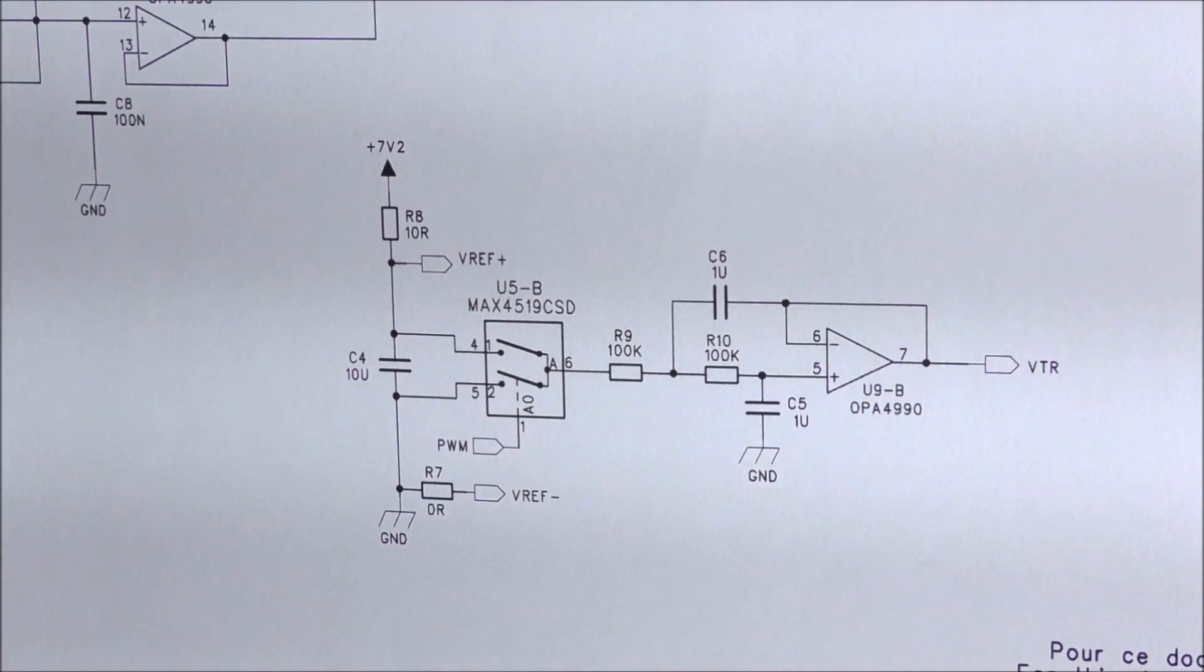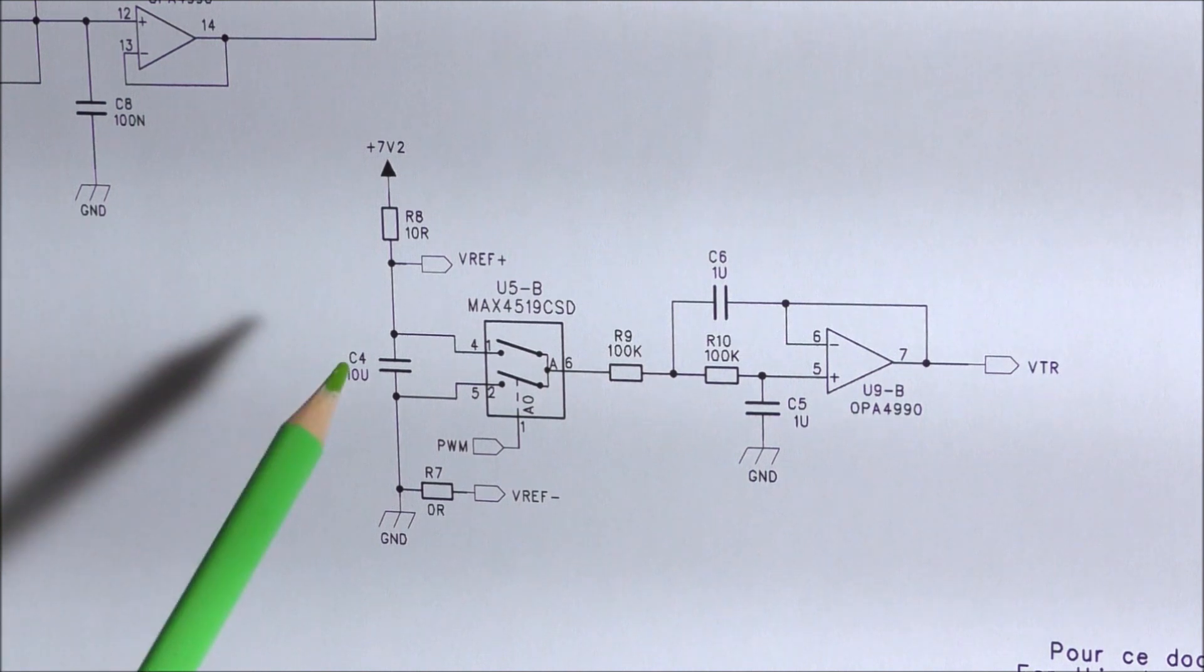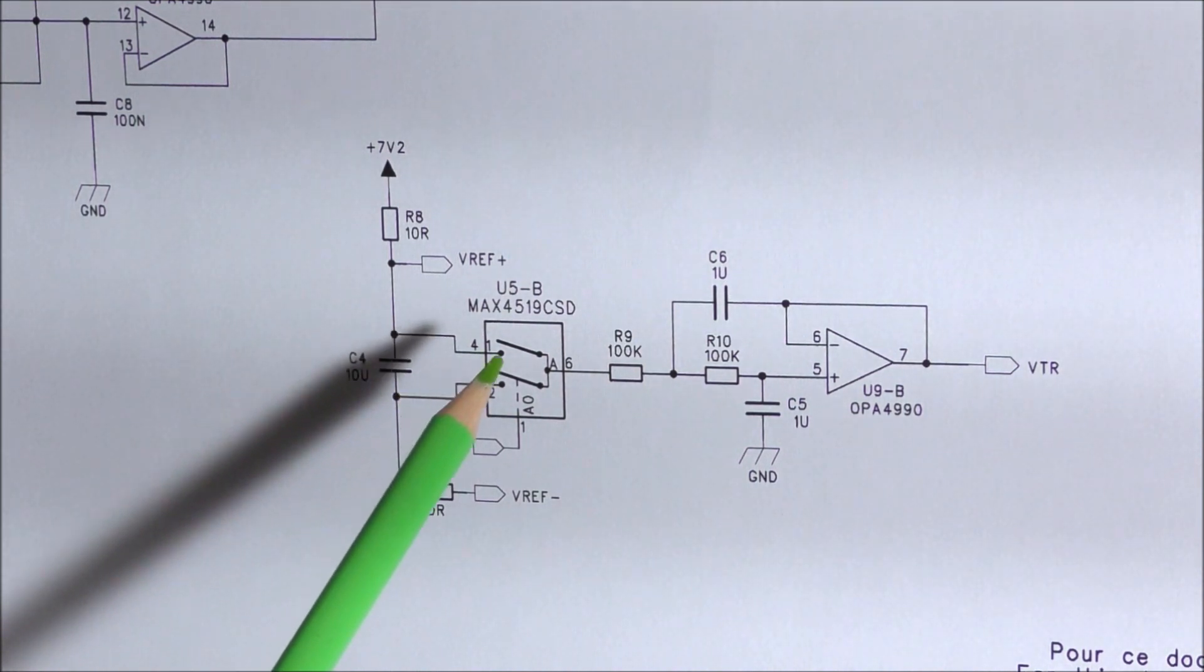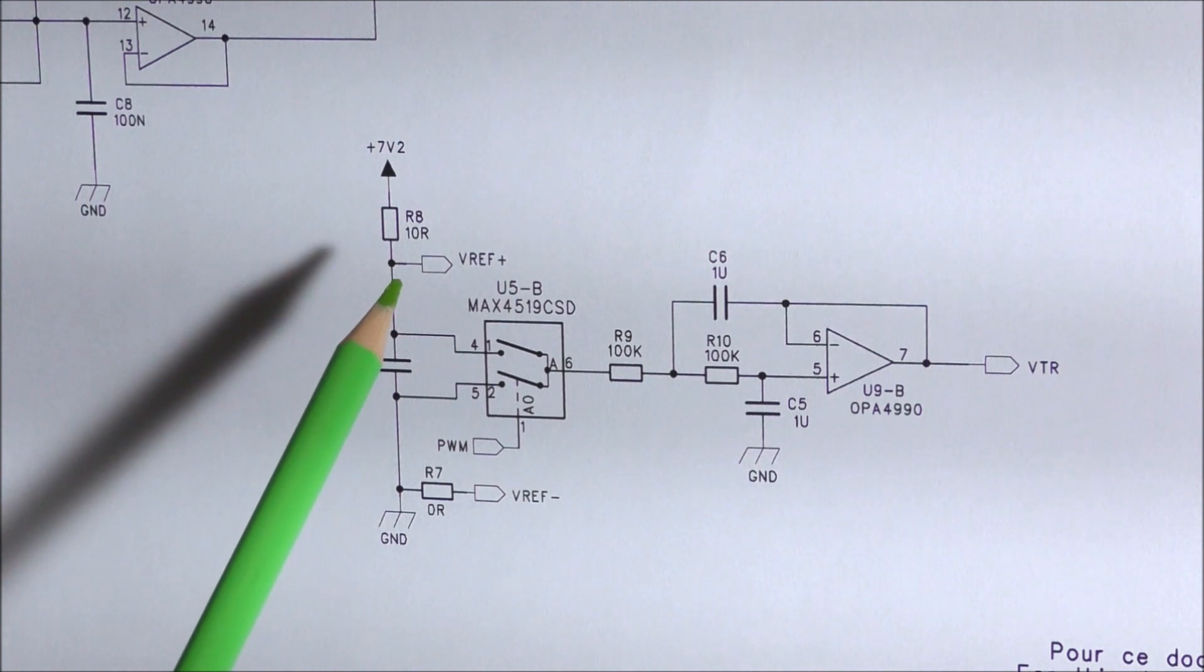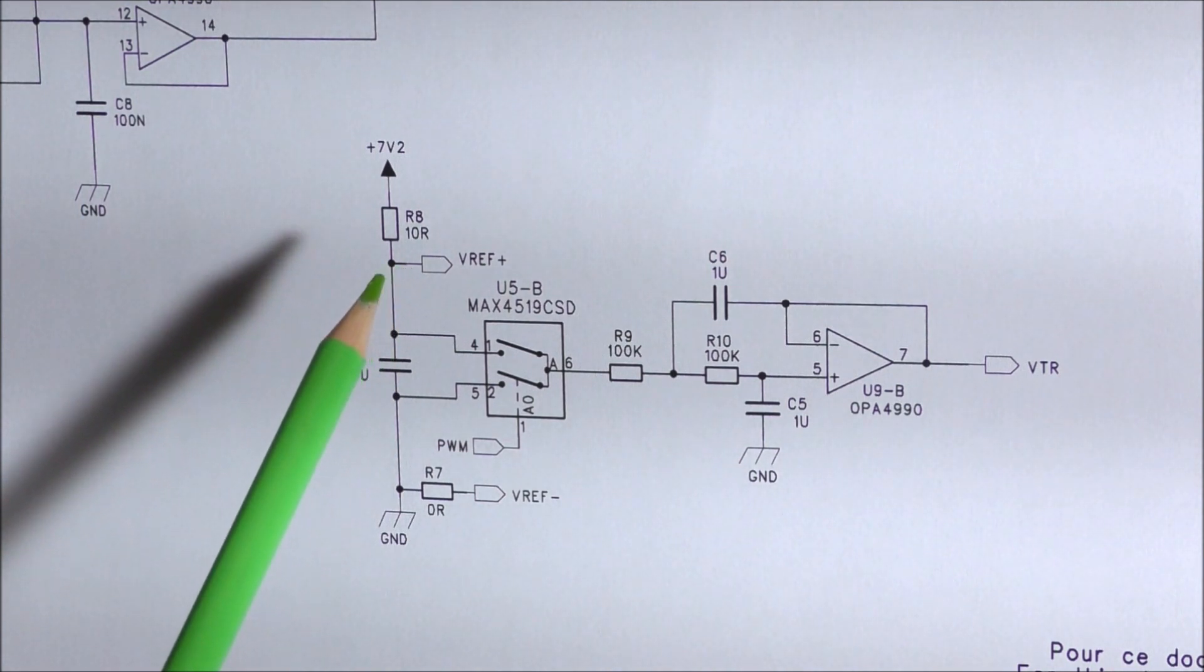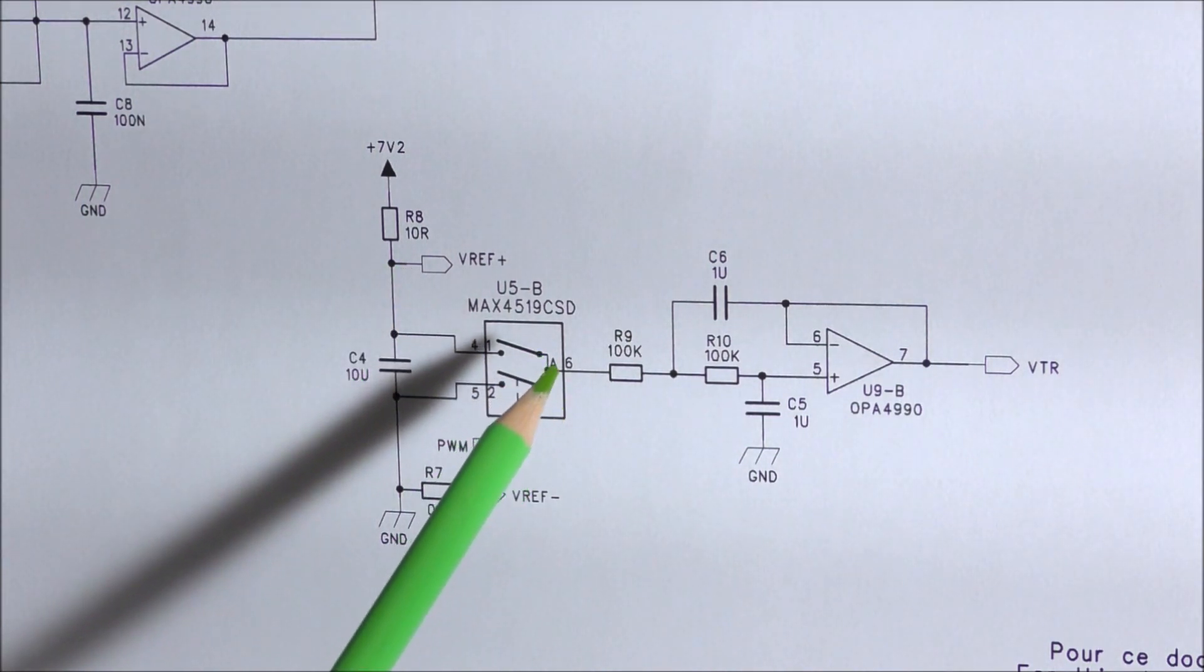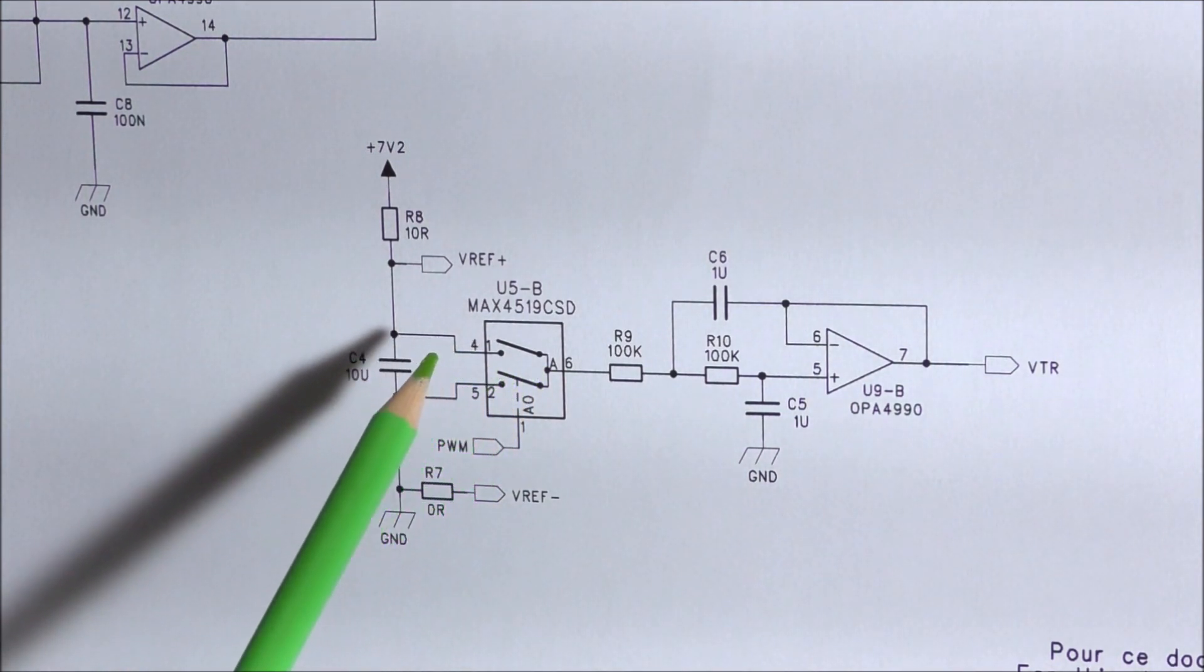Here we have a DAC which uses actually a pulse width modulation. This signal is an output of the microcontroller. It is fed to that switch. The output of the switch is commuted from the ground here, to the positive reference power supply here. And the output, there is a pulse width. And the mean value of this pulse width depends on the duty cycle of that signal here.